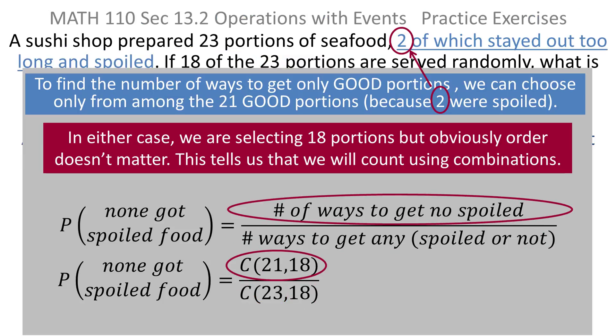But up top, you want the number of ways to get no spoiled, but there were two that were spoiled, so that means of the 23 total portions, only 21 of them were not spoiled. So that's why the 21 appears here. Down bottom, we're choosing among any of them. Up top, we're only choosing among the 21 that were not spoiled.